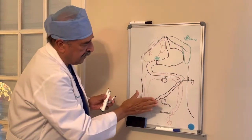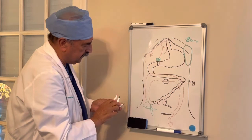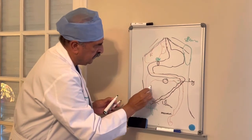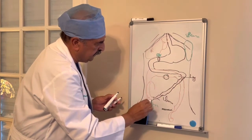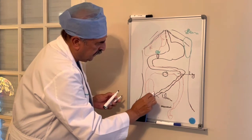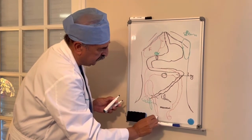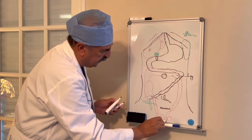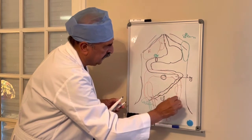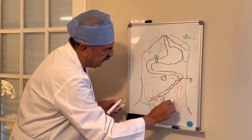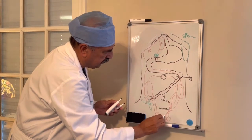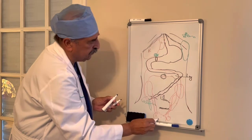The kidneys are in the back part of the abdomen. There are two kidneys, one on each side. The urine comes by the ureter into the bladder from each kidney.